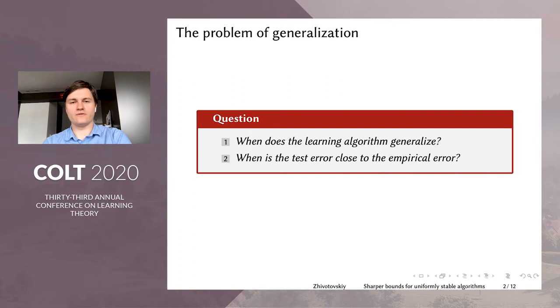We'll start with the following fundamental question. The first one is when does the learning algorithm generalize? And the second, which we can see as a particular case of the first one, when is the test error close to the empirical error? Because in general we know how to minimize the empirical error, but of course it doesn't imply that the test error will be also small. So these two questions form the core of the statistical learning theory in some sense.